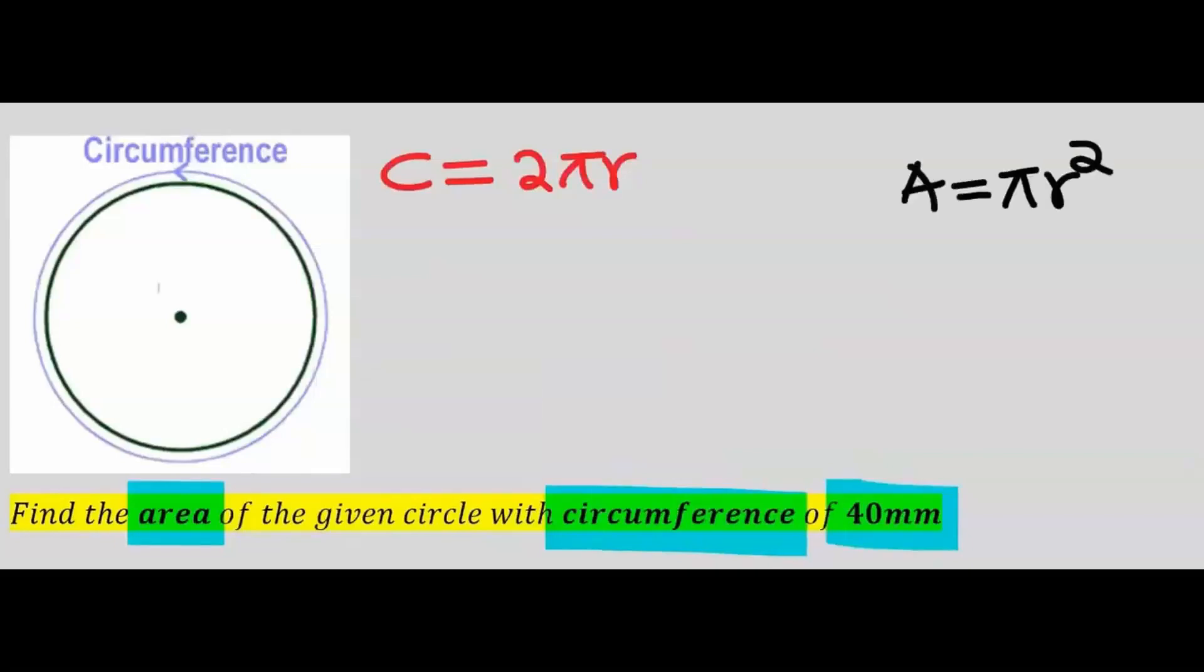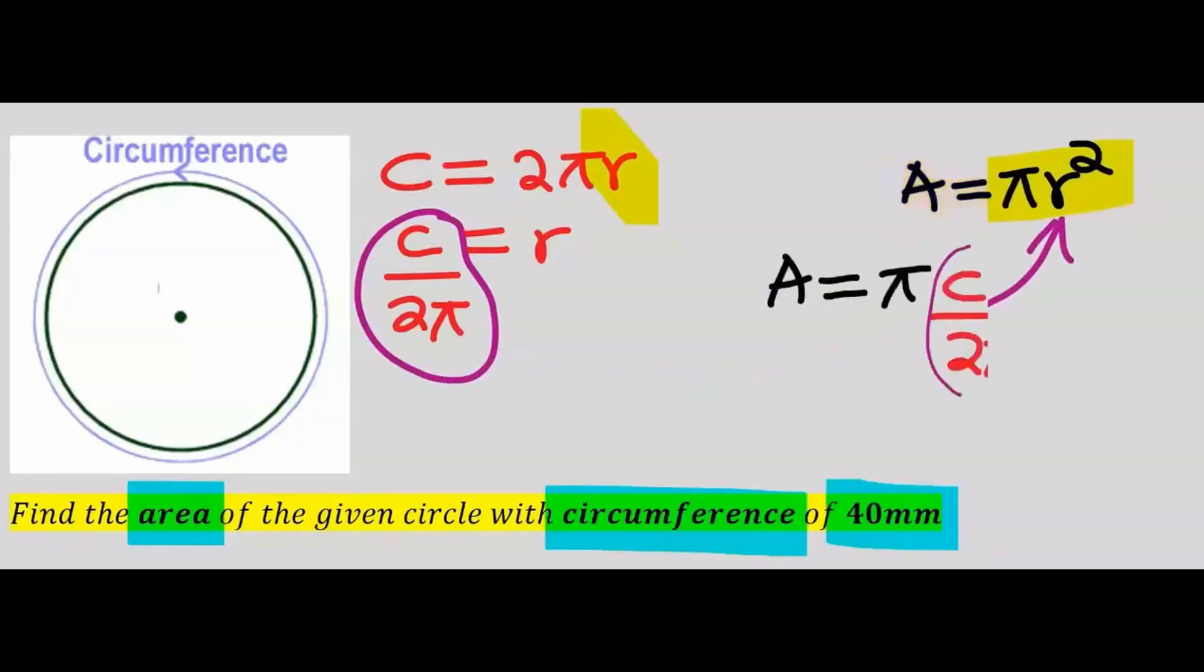the area of a circle is πr². From the circumference of a circle, we're going to make r the subject. We're going to substitute the circumference divided by 2π into the area of a circle. Hence, in